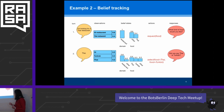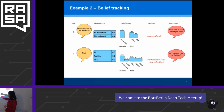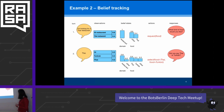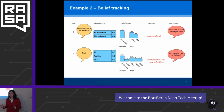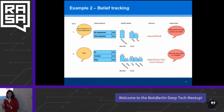Now what happens if we do belief tracking? At the second turn we talked about restaurants, and there was some evidence for Thai food in the first turn. So although 'Thai' is last in the list of potential inputs, it actually is the most probable dialogue state. The system can say 'Did you say Thai or Turkish?' — which is a much better question to ask. We can't hope to build systems that are completely uncertainty-free, but the key is how we model and handle this uncertainty.